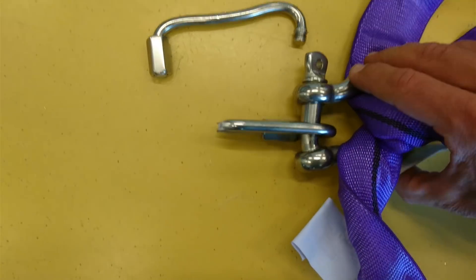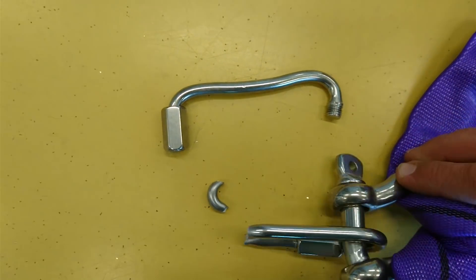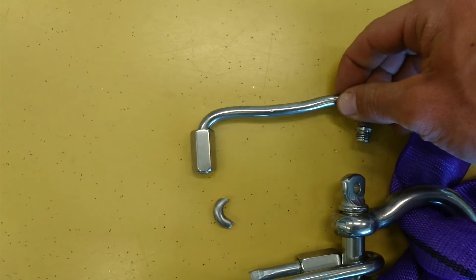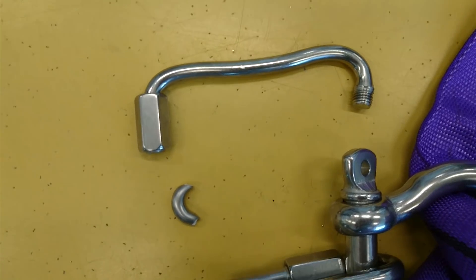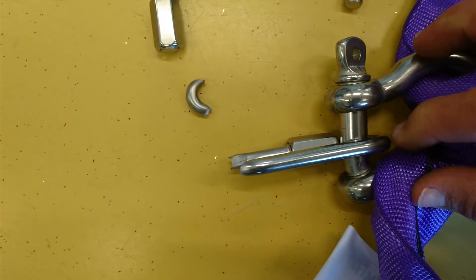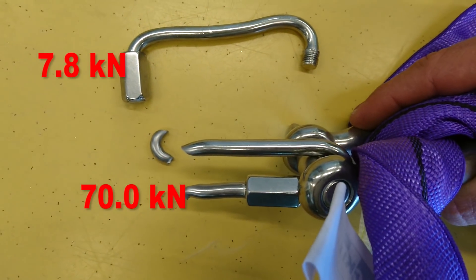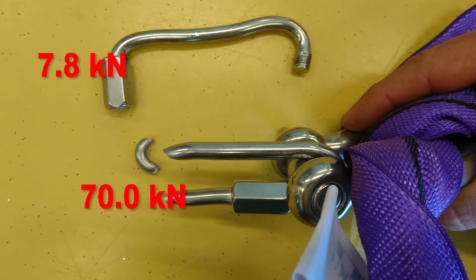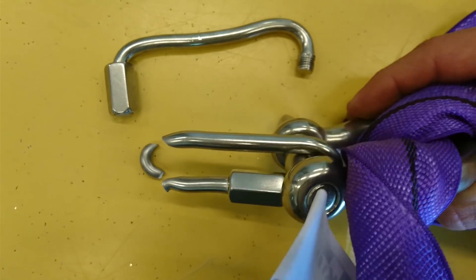Pretty astonishing results came out. The first part is not really astonishing - the open quick link started bending at about 3 to 4 kilonewtons and held just about 8 kilonewtons. However, the closed quick link held about 70 kilonewtons. It was rated for 25 kilonewtons but held almost three times as much, and then it really exploded.